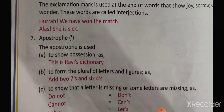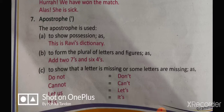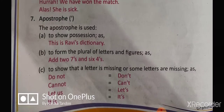Next is apostrophe. Apostrophe is used whenever we are showing possession. It is also used to form the plural of letters and figures. And it is used to show that a letter or some letters are missing, as 'do not' becomes 'don't', 'cannot' becomes 'can't', 'let us' becomes 'let's', and 'it is' becomes 'it's.'